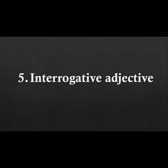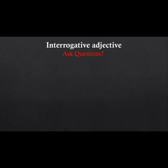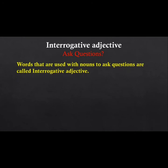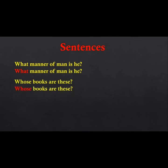The fifth type is interrogative adjective, called 'prashn vachak visheshan' in Hindi. Words that are used with nouns to ask questions are called interrogative adjectives. In sentences: 'What manner of man is he?' — what is an interrogative adjective. 'Whose books are there?' — whose is an interrogative adjective.